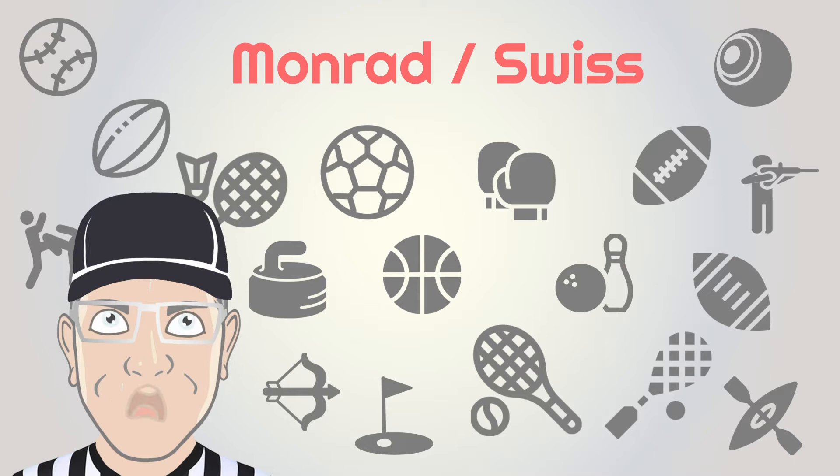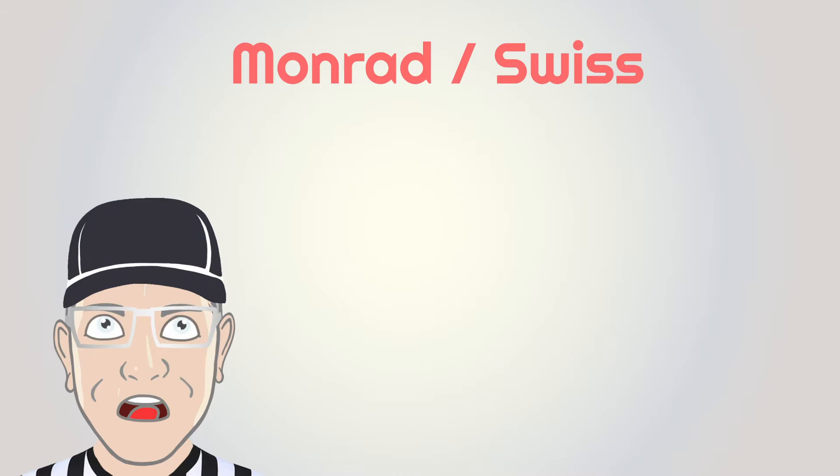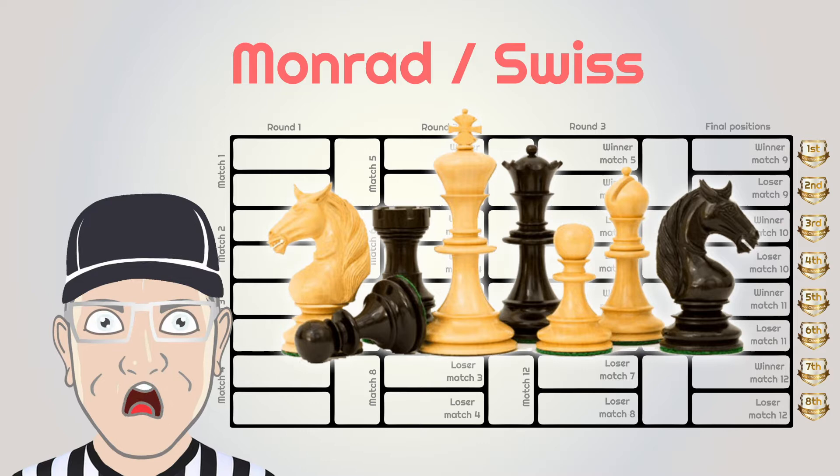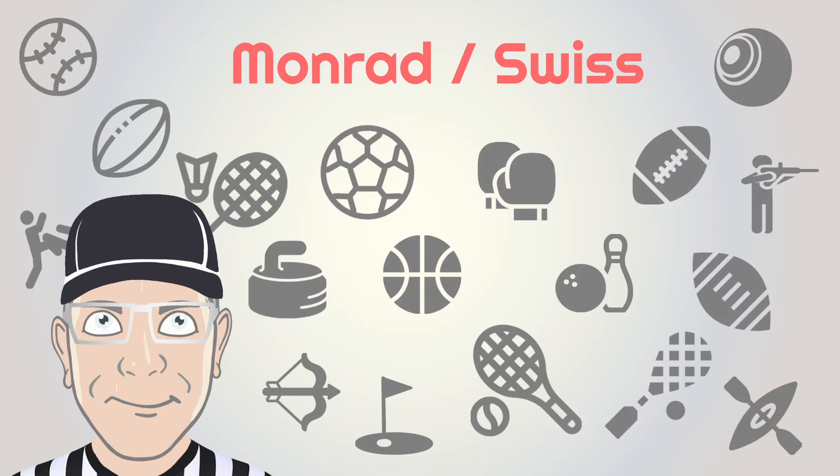A Swiss system or Monrad tournament is a non-eliminating tournament format that features a fixed number of rounds of competition. The system was originally used in chess tournaments but has now been adopted by many other sports. I will give you one example, but there are other similar designs — in principle, all the different formats are based on the same core idea.